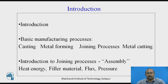In the introduction, as we know, to produce any single element or an assembly, you require to go with any basic manufacturing processes. Out of these four processes — like casting, metal forming, joining process, metal cutting, and so on — whenever the task comes for permanent joints of more than two elements, then the only option is the joining processes.